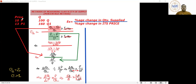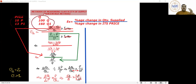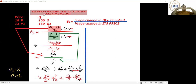In the short period, even if price rises a lot, we can't increase output as much. Here, price change is 30% and quantity change is 60%. So with a smaller change in price, you are able to exploit a larger output — meaning labor and capital were used extensively.